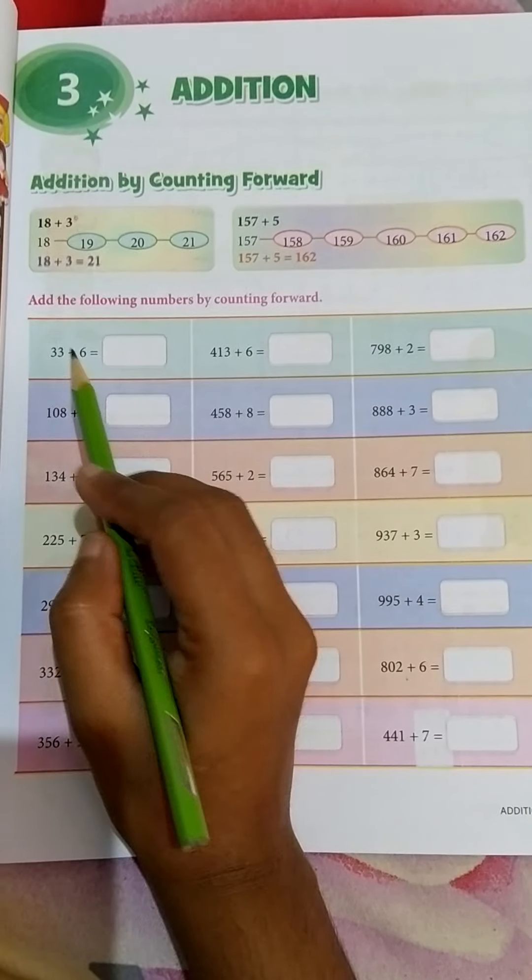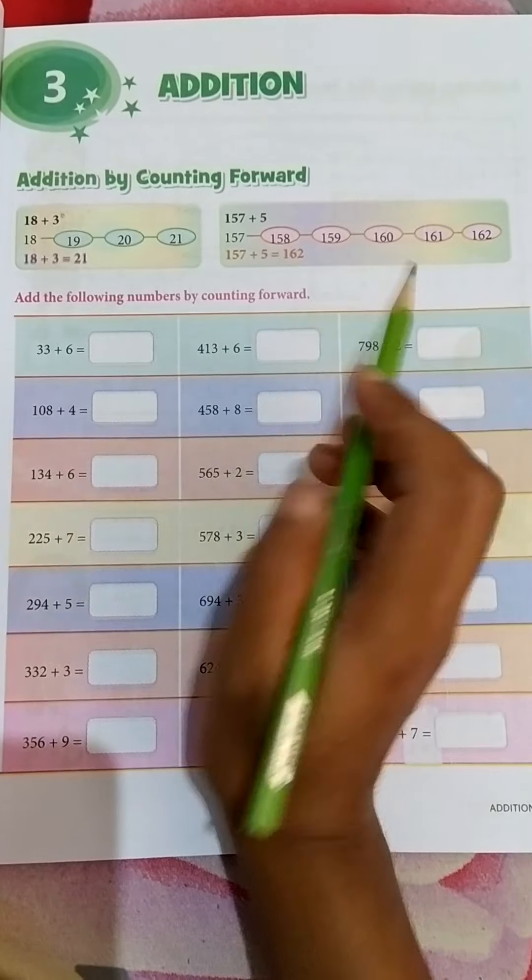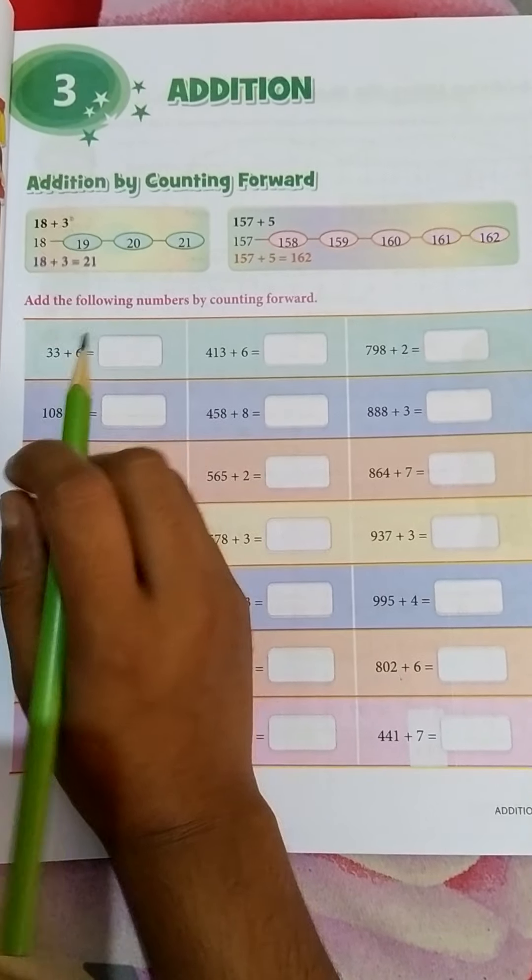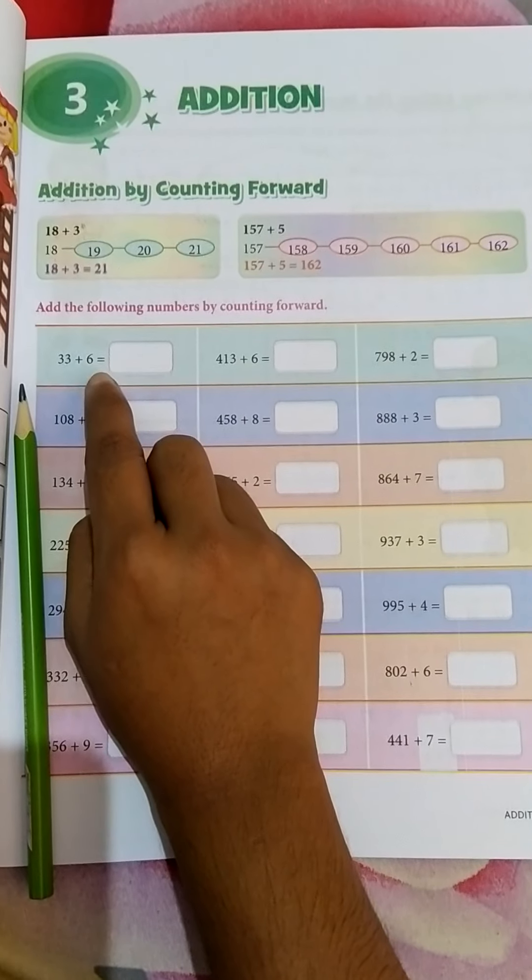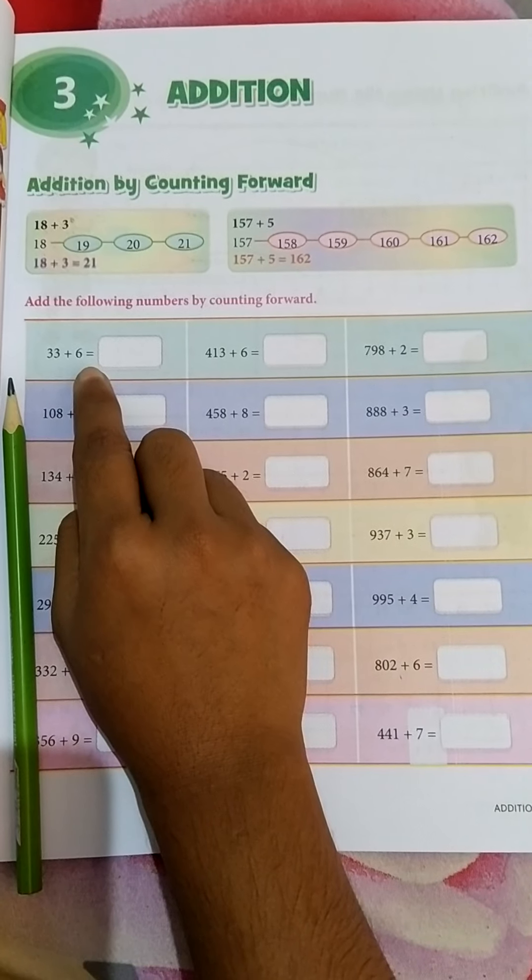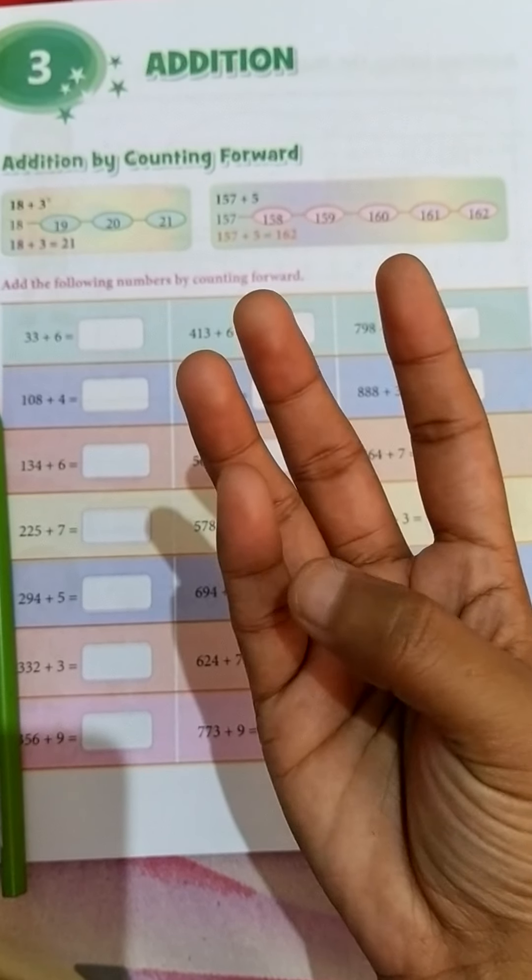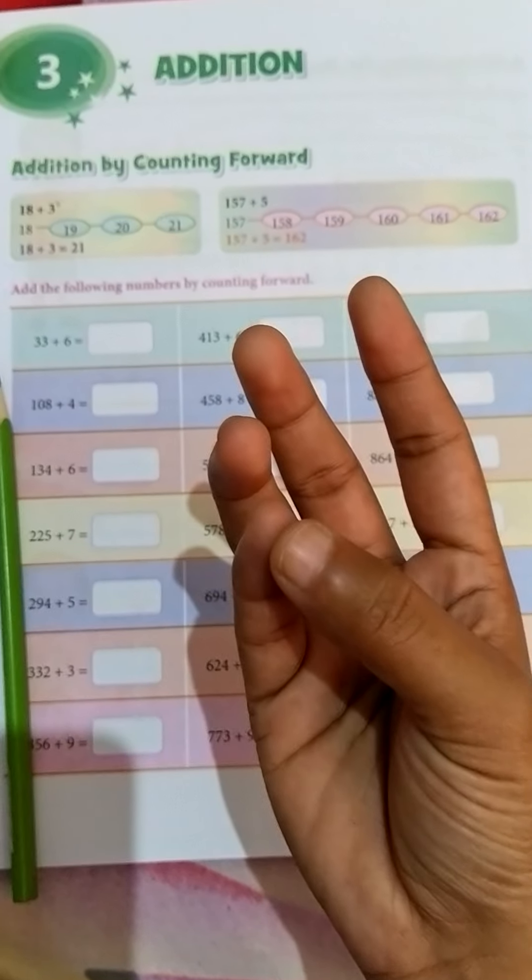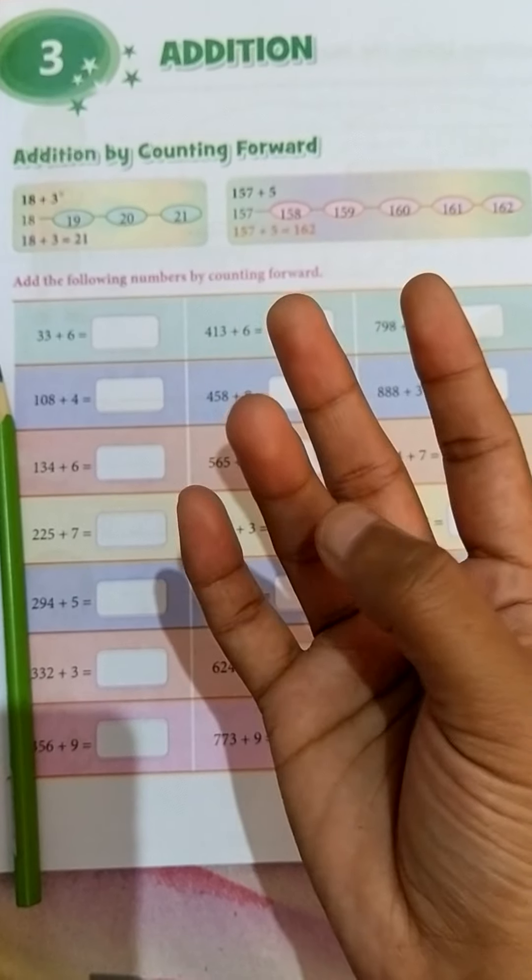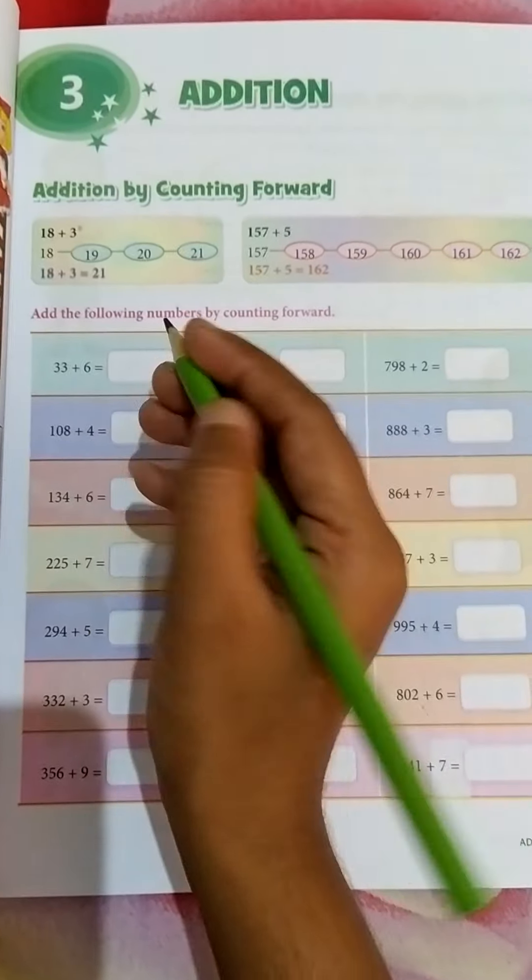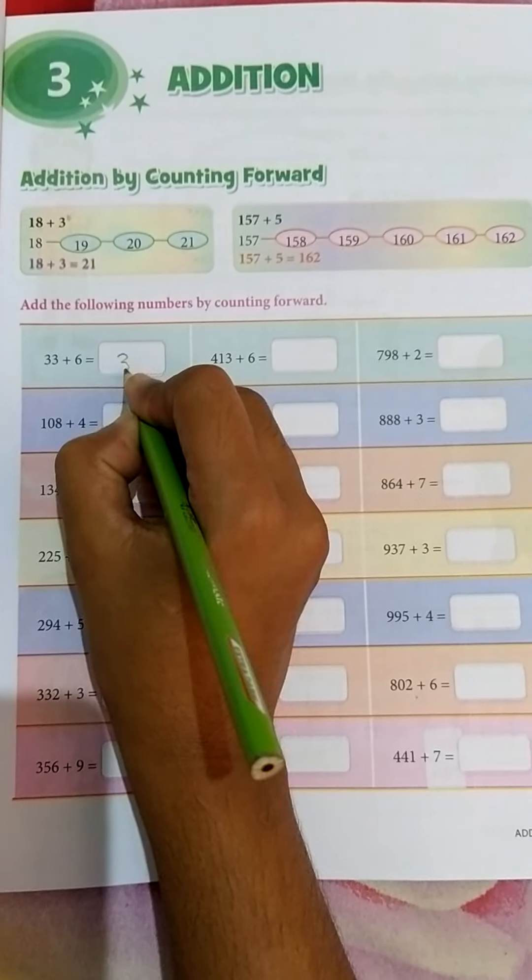Add the following numbers by counting forward. Here is given 33 plus 6. Now how will you count? After 33, you will count 6 more. Like this: 34, 35, 36, 37, 38, 39. Means 33 and 6 will be 39.